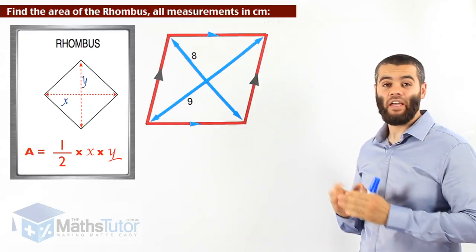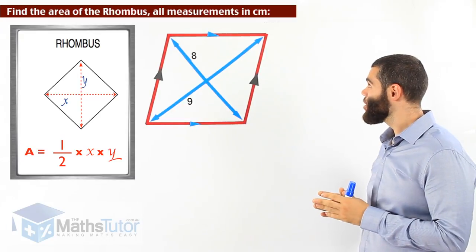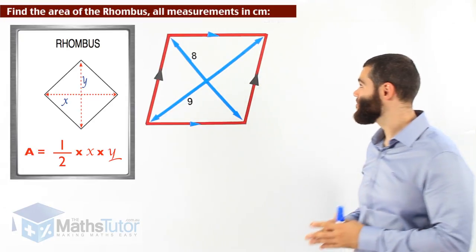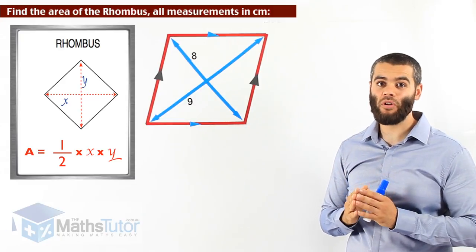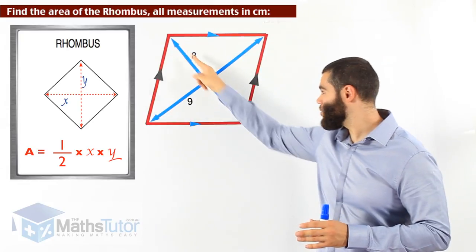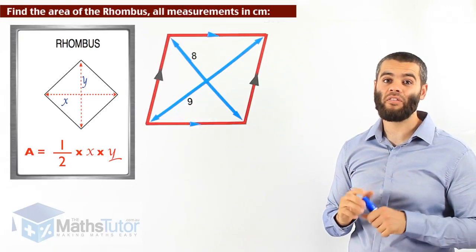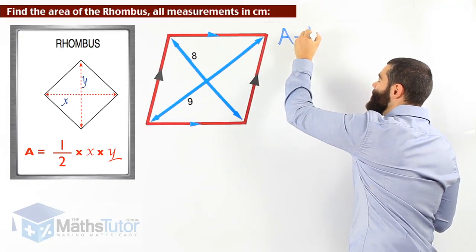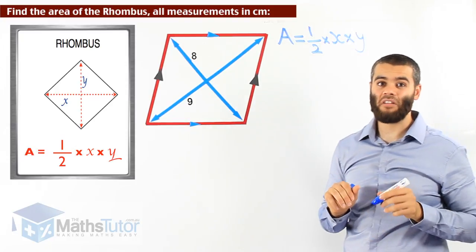Now we're asked to find the area of a rhombus. The measurements are in centimetres. We can see that the diagonals of this rhombus — diagonal number one is nine centimetres, and diagonal number two is eight centimetres. One diagonal is longer than the other. We're going to use the formula half times x times y to find the area. We always write the formula first: Area equals half times x times y.